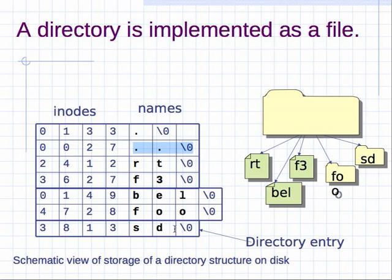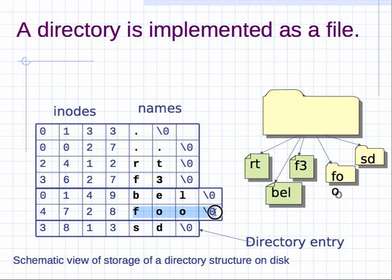Let's say you have in this directory three files and two subdirectories. Each of these files will have a file name that's a null-terminated string and an associated inode. Here's the second string for a file name and the inode, then a third file with its string and inode. The directories look exactly the same — they just look like files, they have a name and an inode. So these last two things — foo and sd — are directories, although you can't really tell just by looking at them.